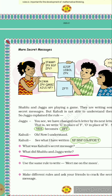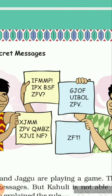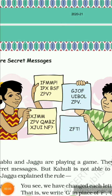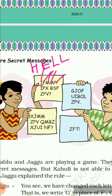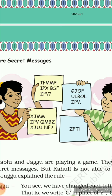Shablu and Jaggu ne kya likha hai? So the first message: the replacement of I is H, F ki jagah aayega E, M se pehle L, and P aapka replacement hai O ka. Then I aapka replacement hai H ka, P is O, X aapka replacement hai W ka. So aapka first word ho gaya hai: H O W.